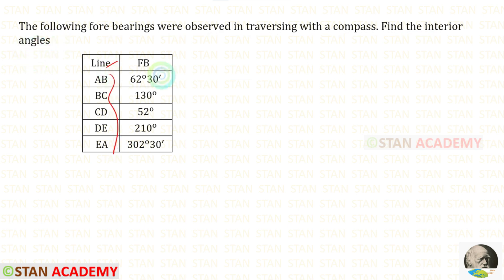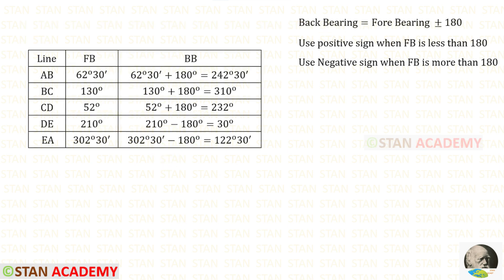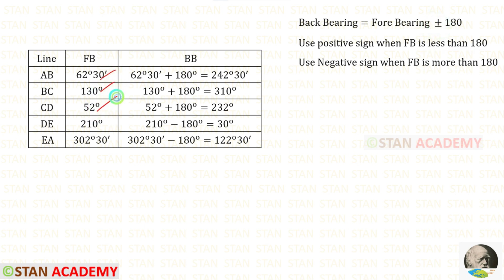The lines and their four bearings are given. Let us find the back bearings. The formula is fore bearing plus or minus 180. If the fore bearing is less than 180, we use the positive sign. If the fore bearing is more than 180, we use the negative sign. These bearings less than 180 use the positive sign, and those more than 180 use the negative sign. In this way, we can find all of the back bearings.